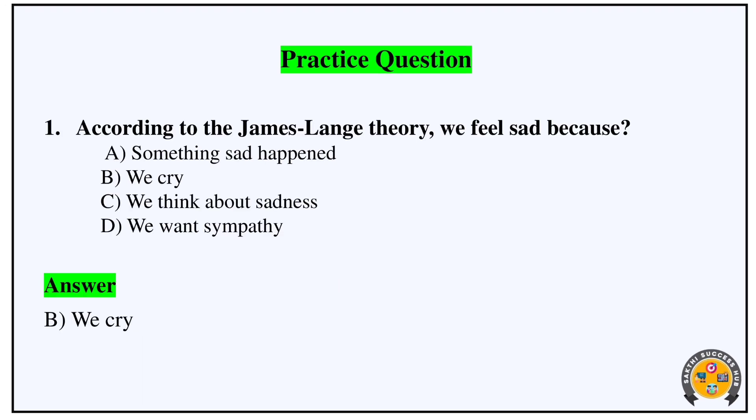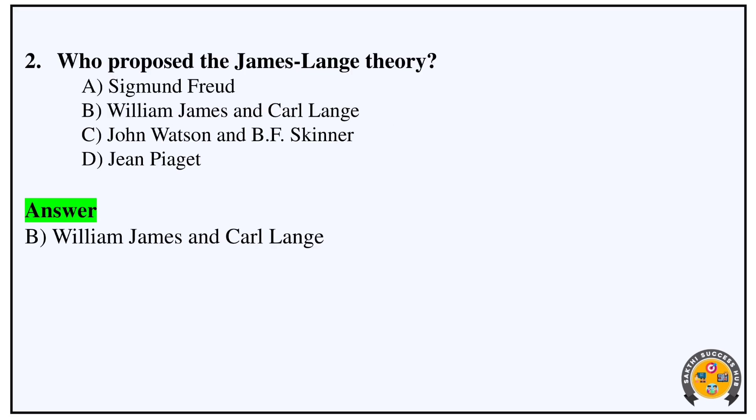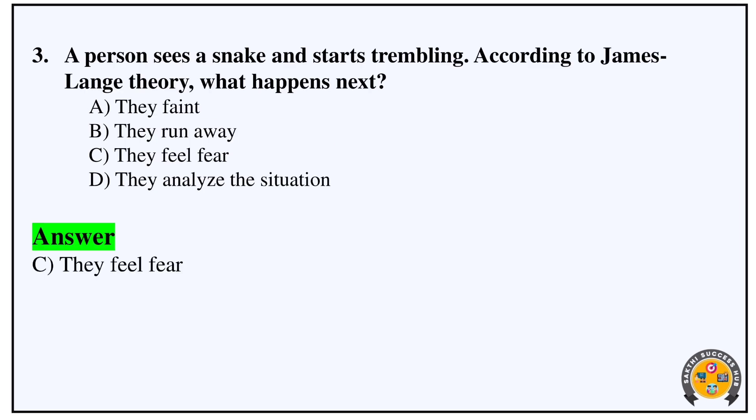Practice questions: According to James-Lange, we feel sad because we cry — if we cry, we will feel sad. Second question: who proposed the James-Lange theory? William James and Carl Lange. Third question: if a person sees a snake and starts trembling, according to James-Lange, what happens next? First the body changes, then you feel the emotion — they feel fear.